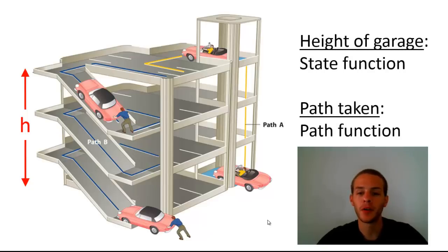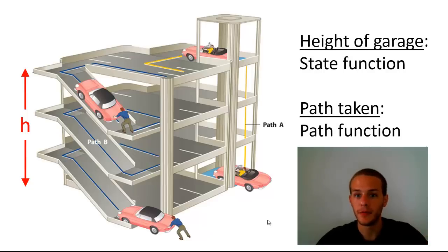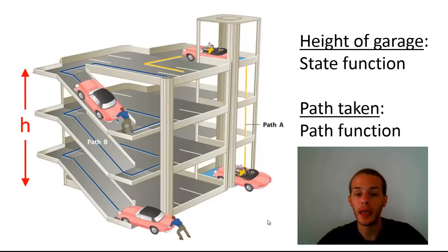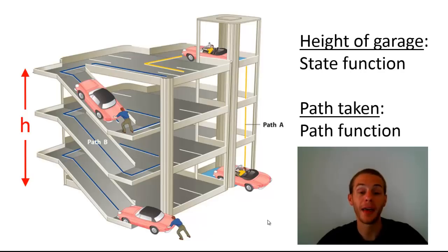Notice there are two different routes by which somebody can climb up this parking garage. Path A shows a gentleman in a yellow t-shirt taking an elevator up the garage, and path B shows a gentleman in a blue t-shirt who is pushing his car up the ramps. So the height of the garage is like a state function — its value only depends on the current state, whether you're at the bottom or the top. The path you take to get there is a path function.